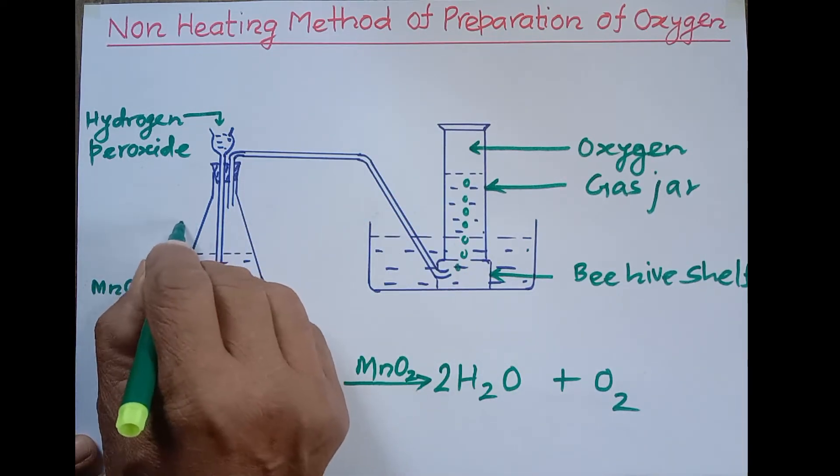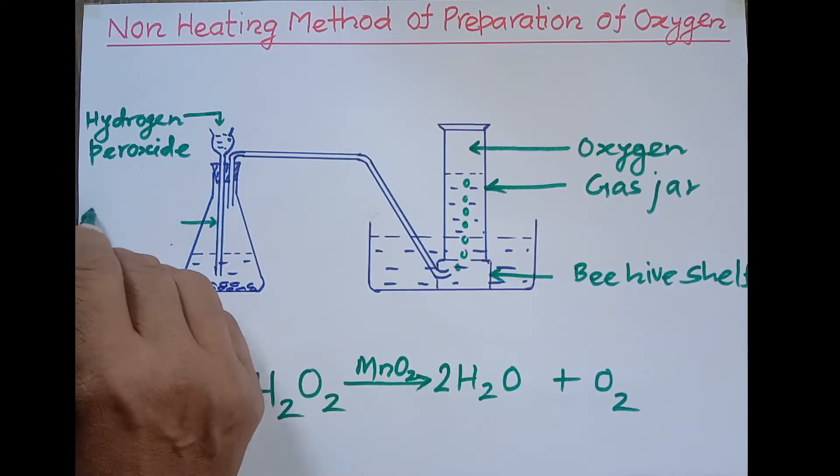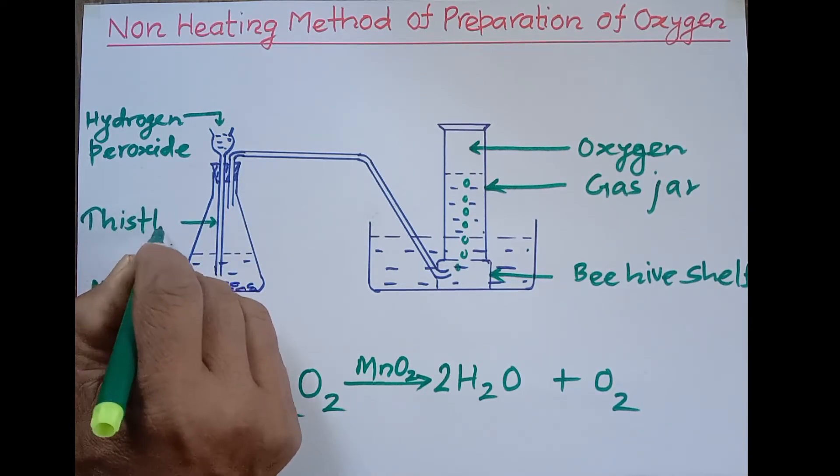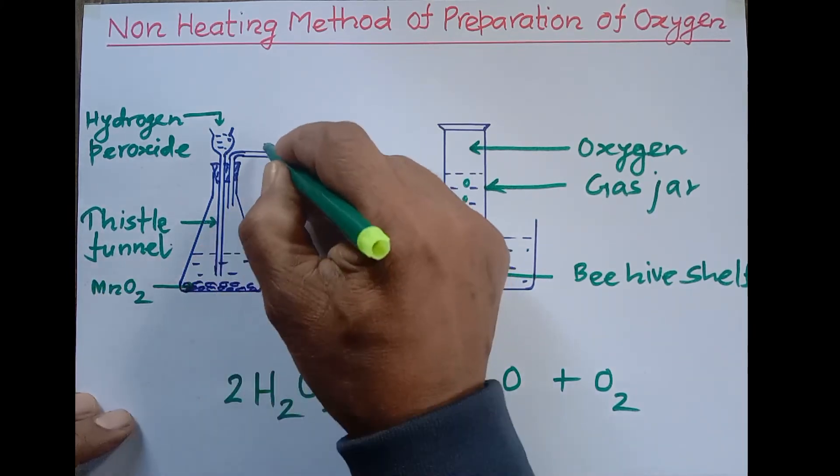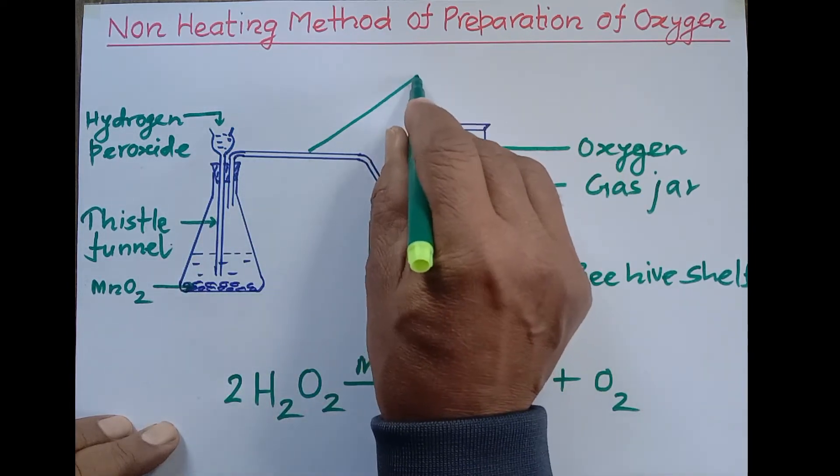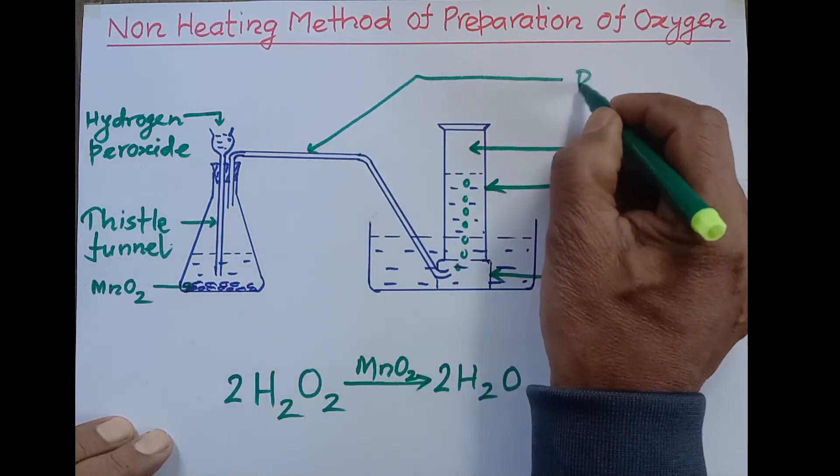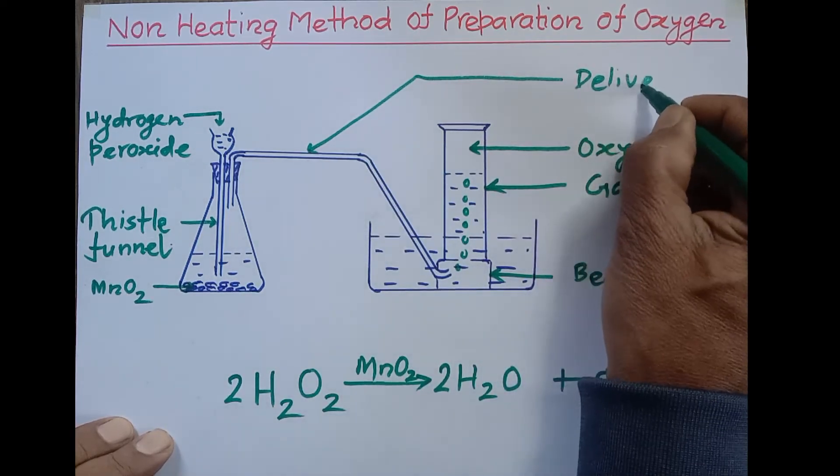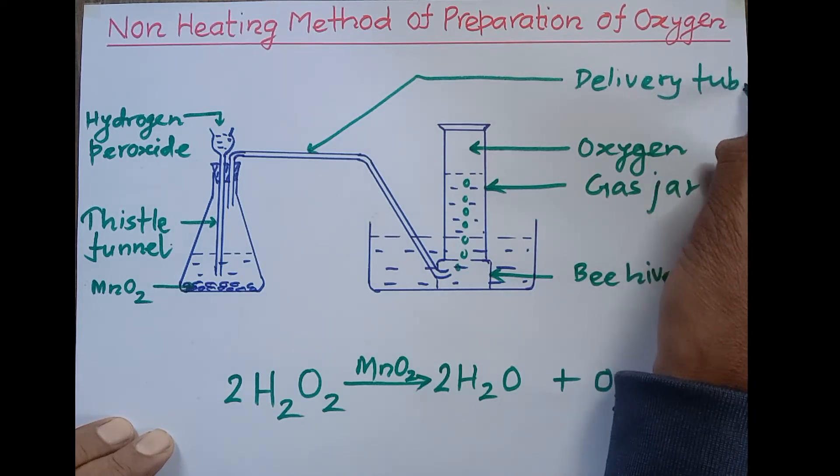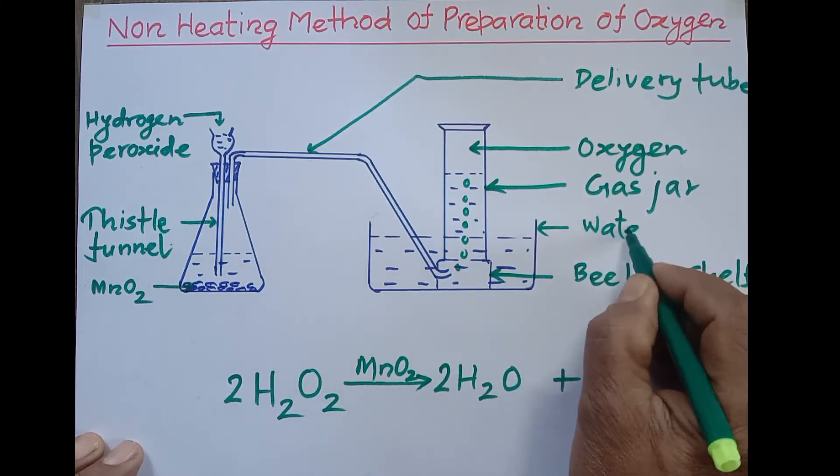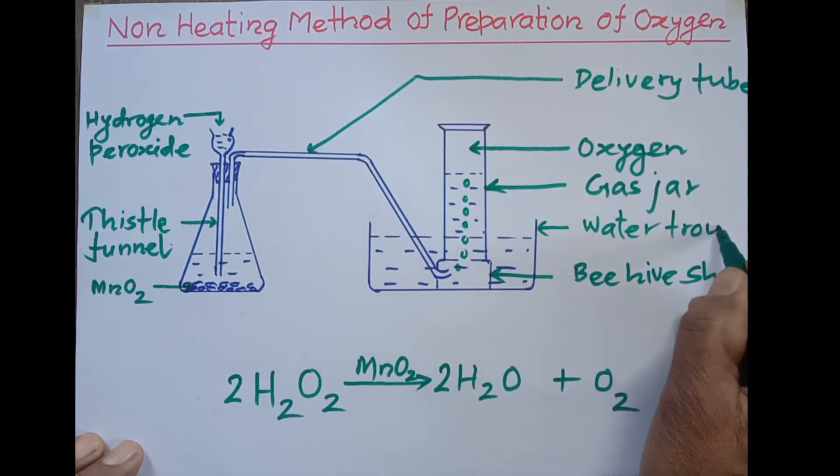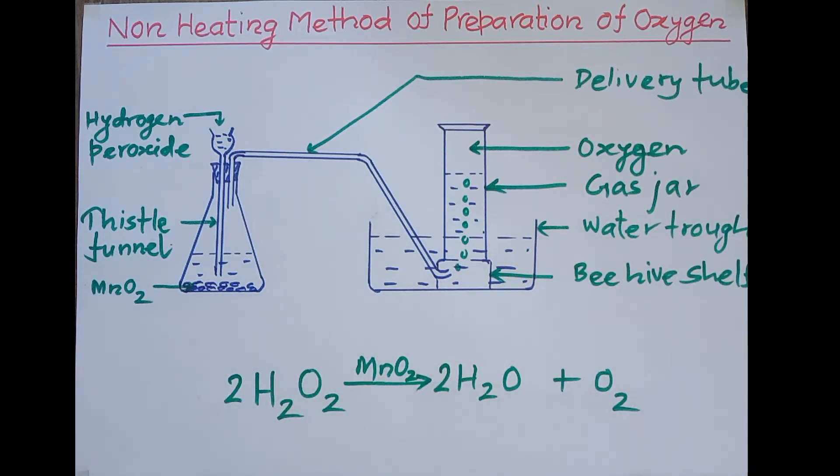Now we have to label the parts of this diagram. This is the thistle funnel, and this is the delivery tube, and this is the water trough.